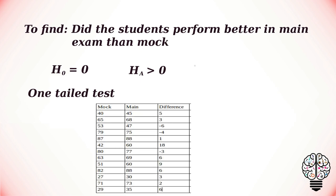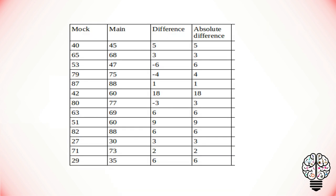The next step is to find the differences between the mock test and the main test. Here we have to subtract the main test marks from the mock test marks. If we calculate for all the 13 values we get these values. The next step is to find the absolute difference. These absolute values have neither positive sign nor negative sign.